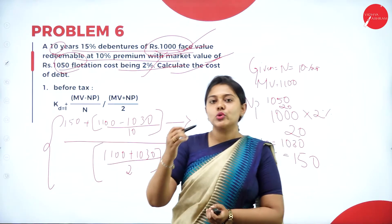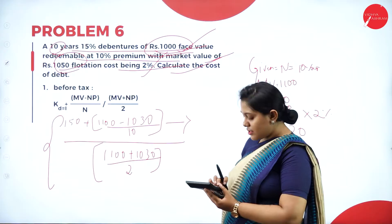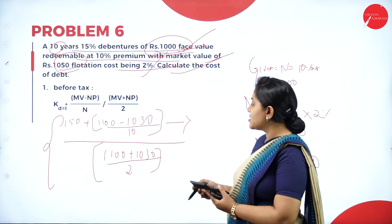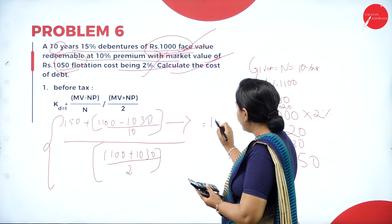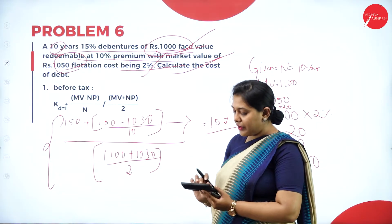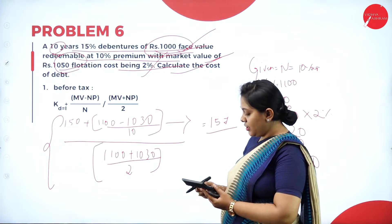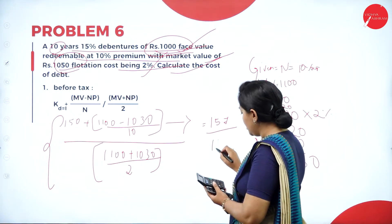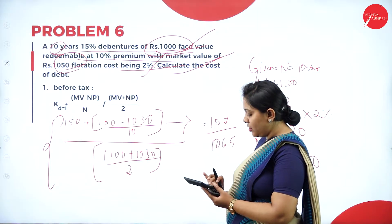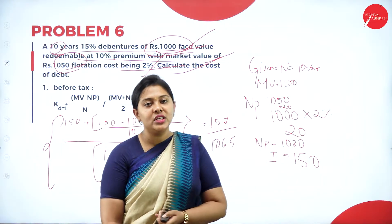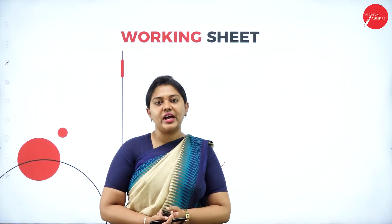Let's use the calculator. 1100 minus 1030 is 70, divided by 10 is 7. Then 7 plus 150 is 157. The denominator is (1100 + 1030) divided by 2, which is 1065. So 157 divided by 1065 gives 0.147. That is the answer for Problem 6.